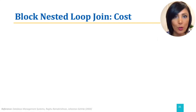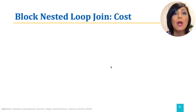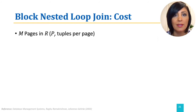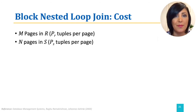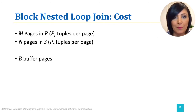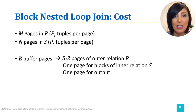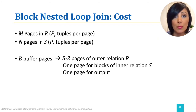To estimate the cost of the block nested loop join, let's use the same parameters. Assume we have M pages in relation R, each page containing PR tuples, and N pages in relation S with PS tuples per page. An additional parameter is that we have B buffer pages available. We use B minus 2 of those pages for the outer relation R, one page for reading blocks of the inner relation S into memory, and one page for generating output.